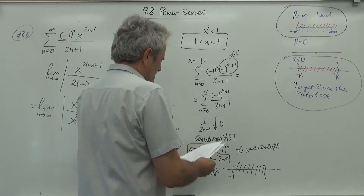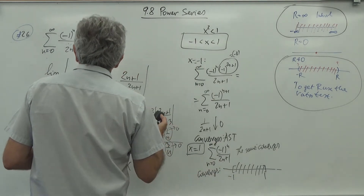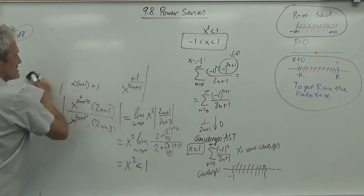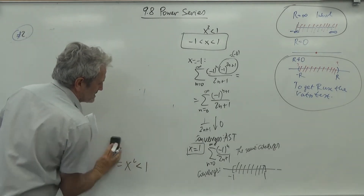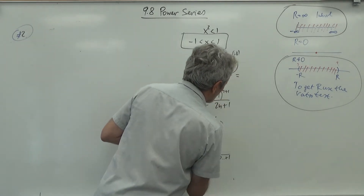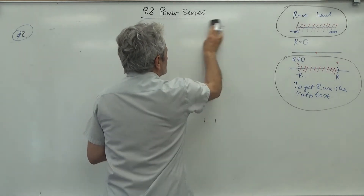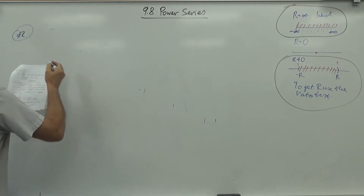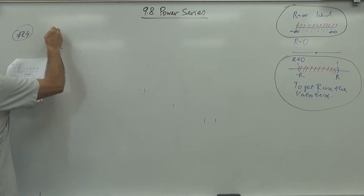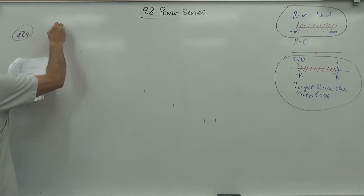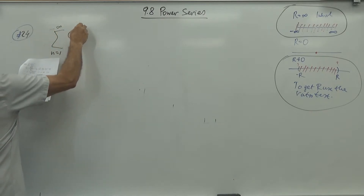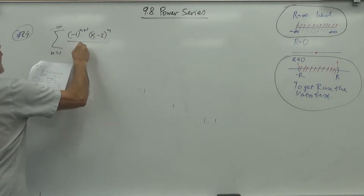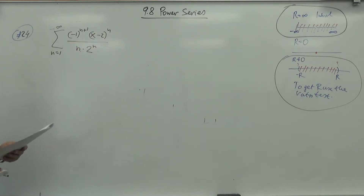Let's look at one example where the series is not centered at zero. When centered at c, the whole story shifts. Problem number 24: the sum from n=1 to infinity of (-1)^(n+1) times (x-2)^n over (n times 2^n). Find the interval of convergence.